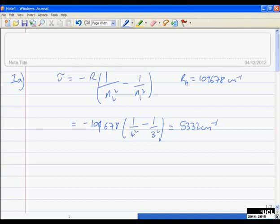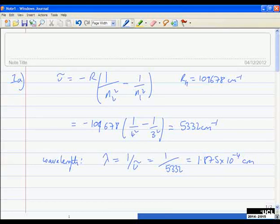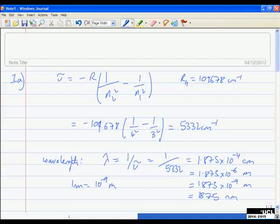Then determine the wavelength in nanometers. Let's write down now that we're going to find the wavelength. Wavelength is 1 over the wave number, quite straightforwardly, 1 over 5332, which when I put those numbers in my calculator, I get 1.875 times 10 to the minus 4 centimeters. That's the correct wavelength in centimeters, but we're told to do that in nanometers, so let's convert this. This is 1.875 times 10 to the minus 6 meters. Remember, a nanometer, 1 nanometre, is 10 to the minus 9 meters, and so that's 1875 nanometers.